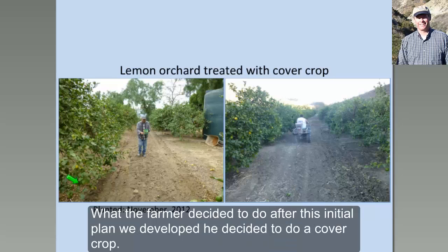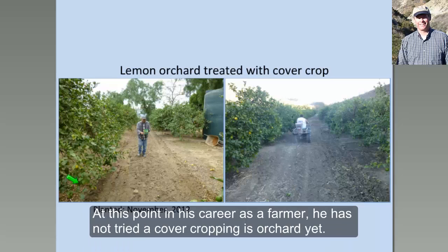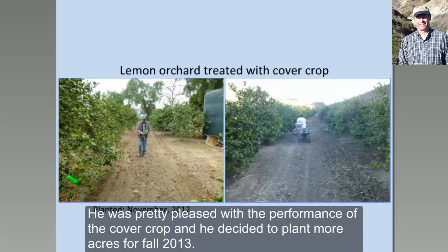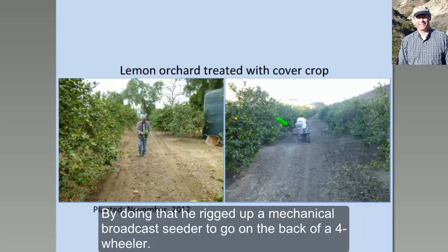What the farmer decided to do after this initial plan to treat soil erosion and runoff was plant a cover crop. At this point in his career as a farmer, he had not tried cover cropping in his orchard yet. In the fall of 2012, he planted his first cover crop using a hand broadcast seeder with three or four workers. As the crop grew, he was pleased with the performance, and this resulted in him deciding to plant more acres for the fall of 2013. He rigged up a mechanical broadcast seeder to go on the back of a four-wheeler.